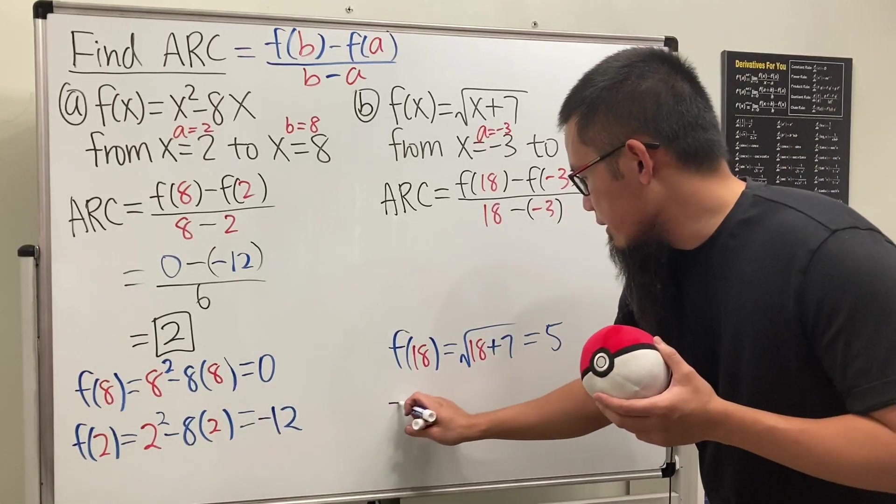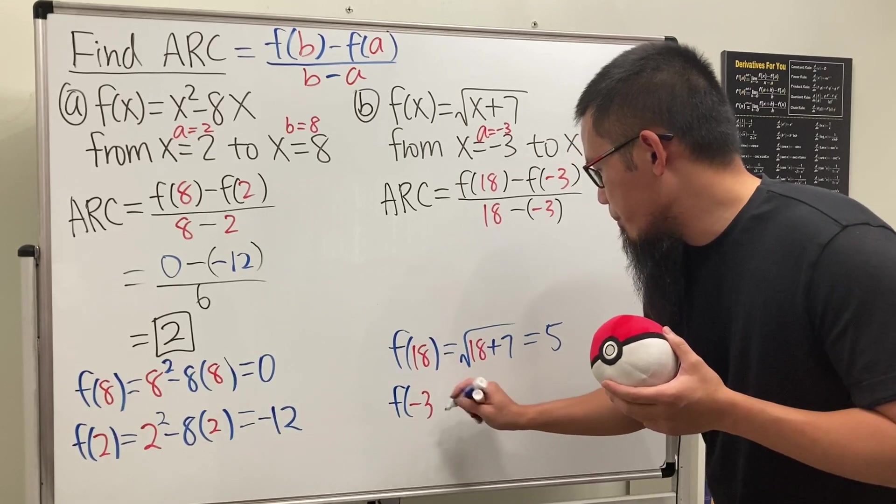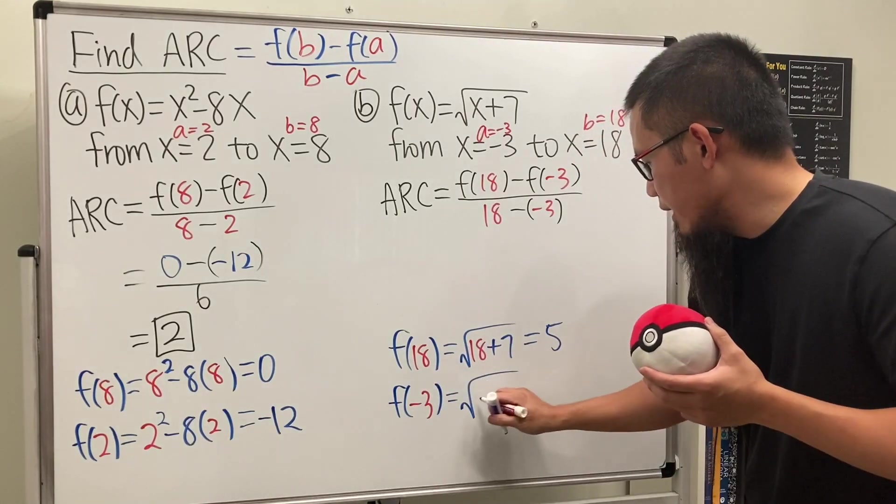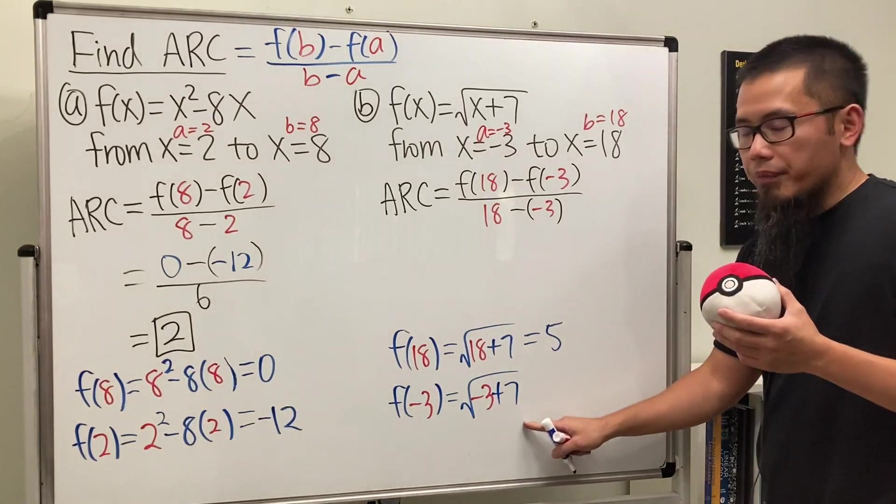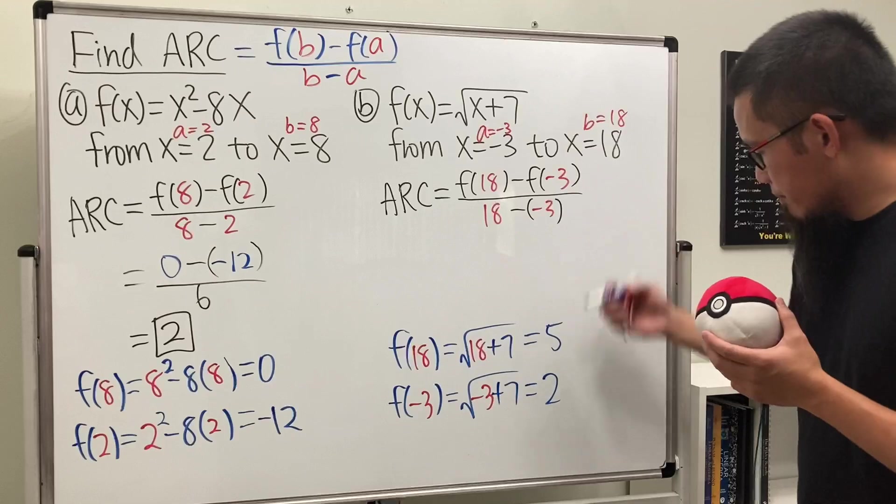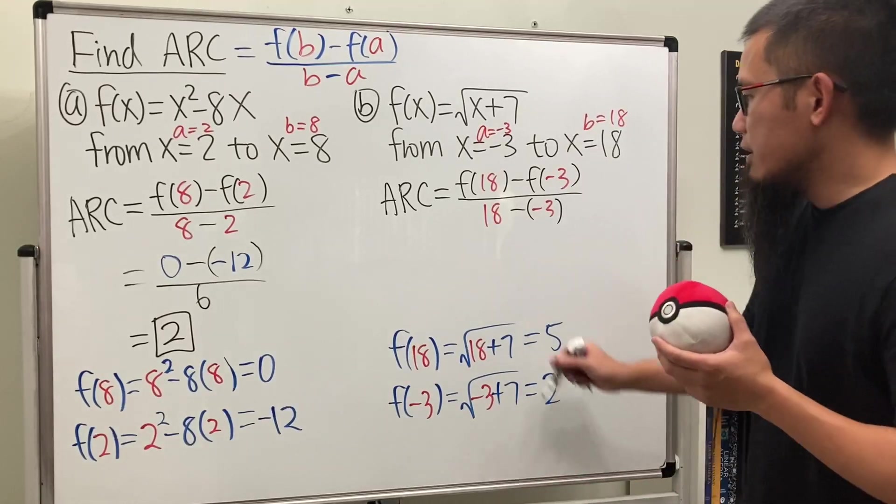And then here we have f of negative 3. This is going to be square root of negative 3 plus 7, and that's 4. Square root of 4 is just 2, so we have 2.